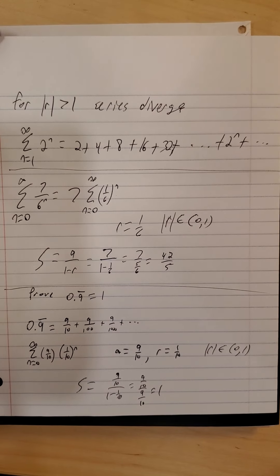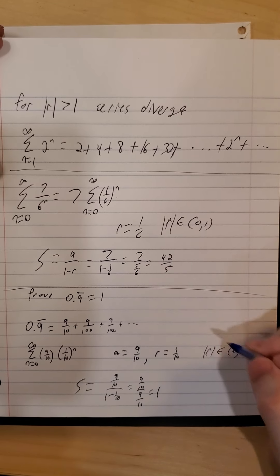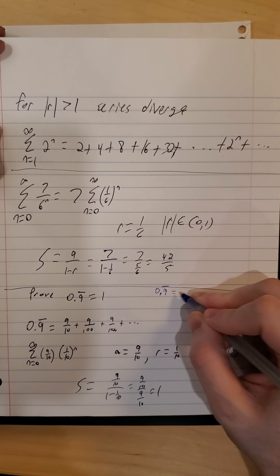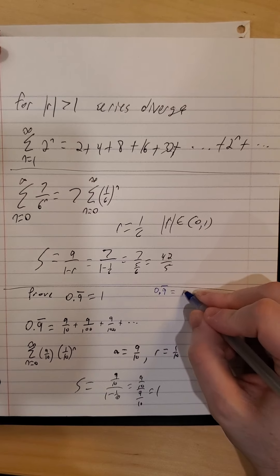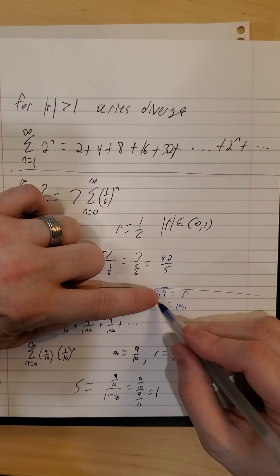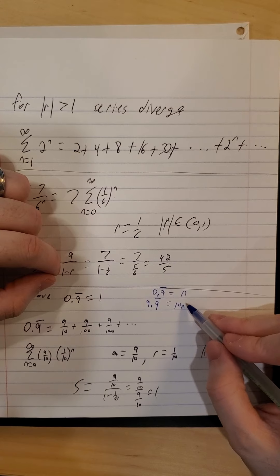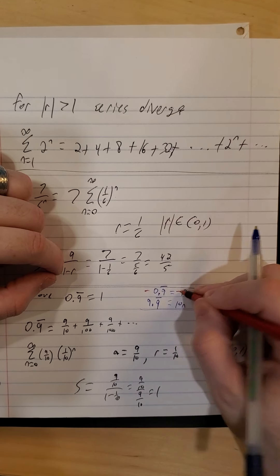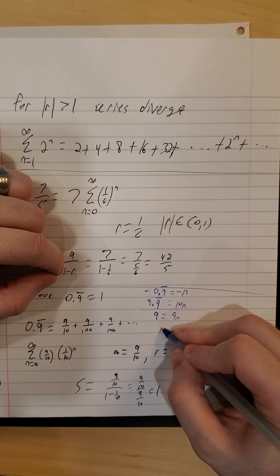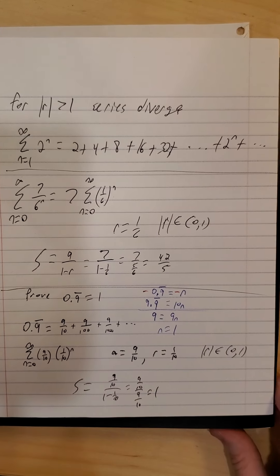That's a proof using our new tools. If you're ever looking to explain that to someone who hasn't taken Calc 2, there's a way without the summation: let 0.999... equal some variable n, then 10n moves the decimal one slot giving 9.999..., and subtracting the bottom from the top gives 9n = 9, so n = 1 exactly. That's a more relatable proof; this version lets us practice our new skills with series.